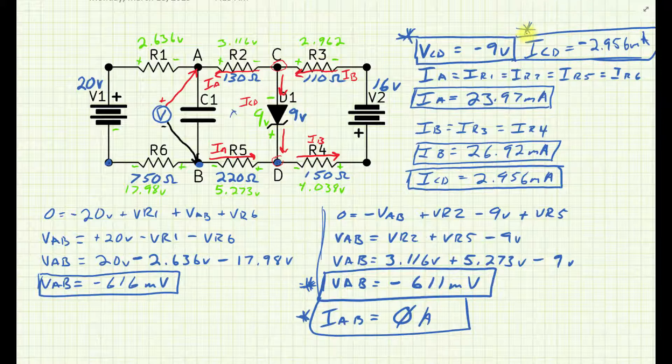I've got my ICD current, which would show on my meter measured in that way as a minus 2.956 milliamps. I've solved this thing. And for those of you that stuck around until the end, bravo to you.